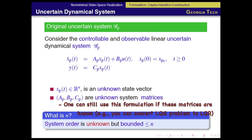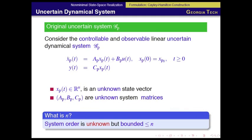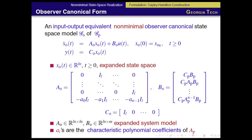If we choose n to be, let's say, 10, system order can be 8, 5, whatever, but it is upper-bounded by 10. Nothing much is known, but of course we assume controllability and observability of the linear uncertain dynamical system Gp.